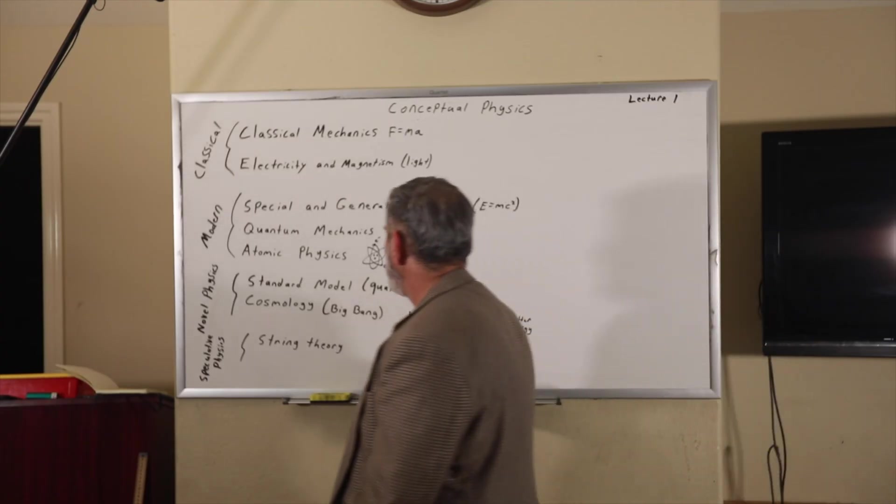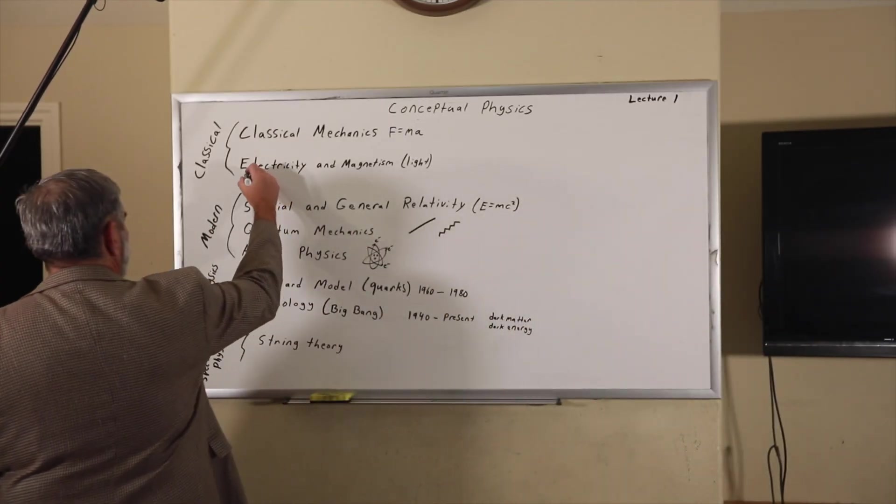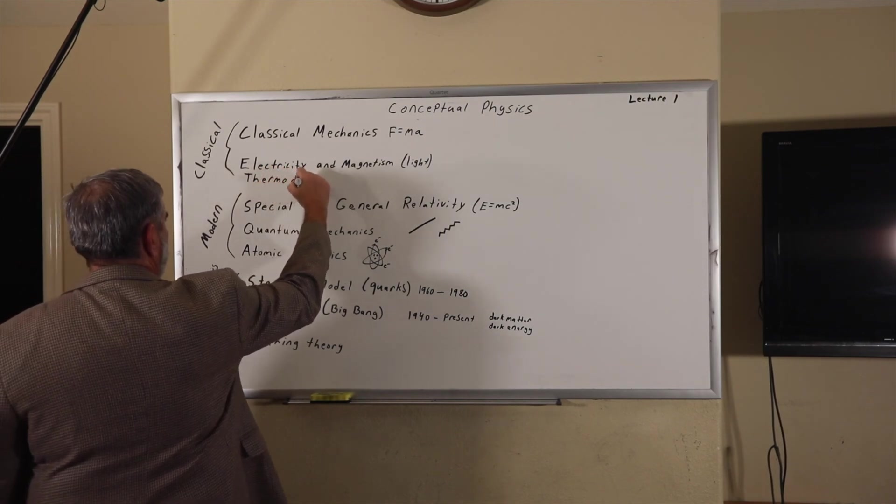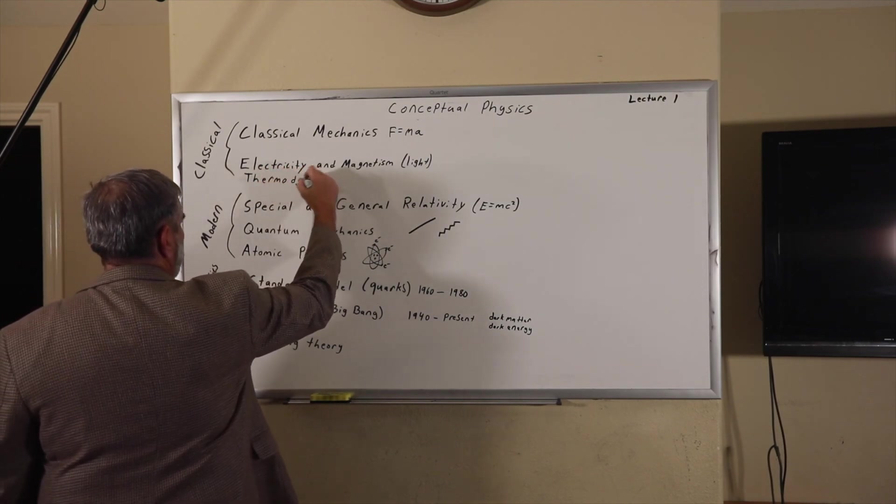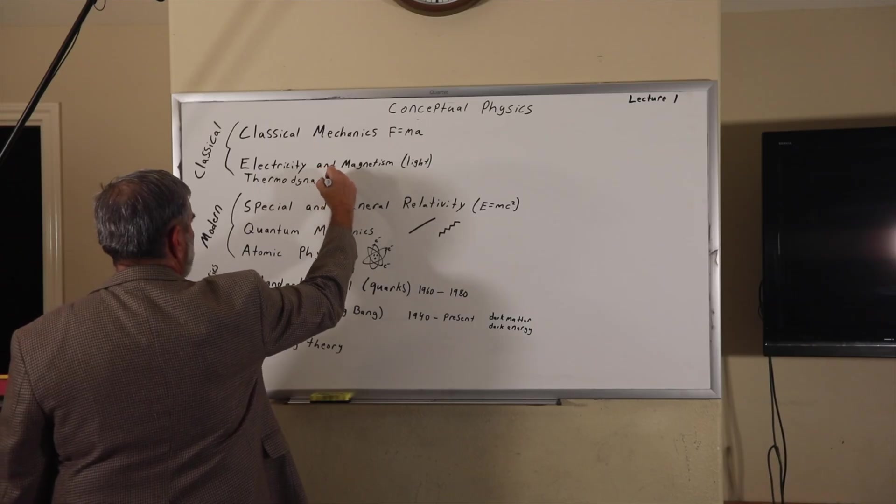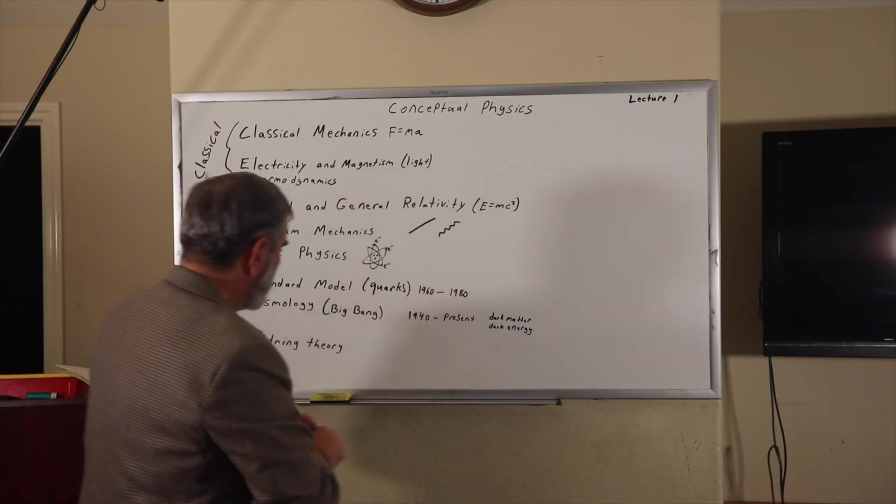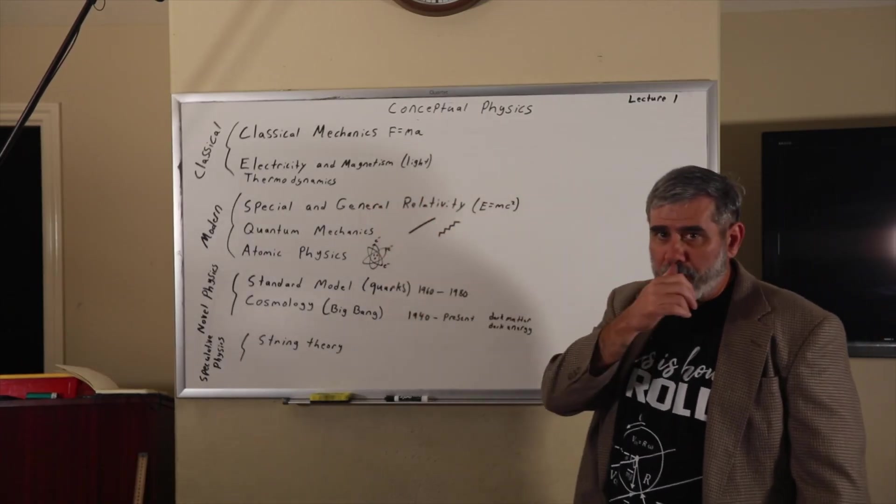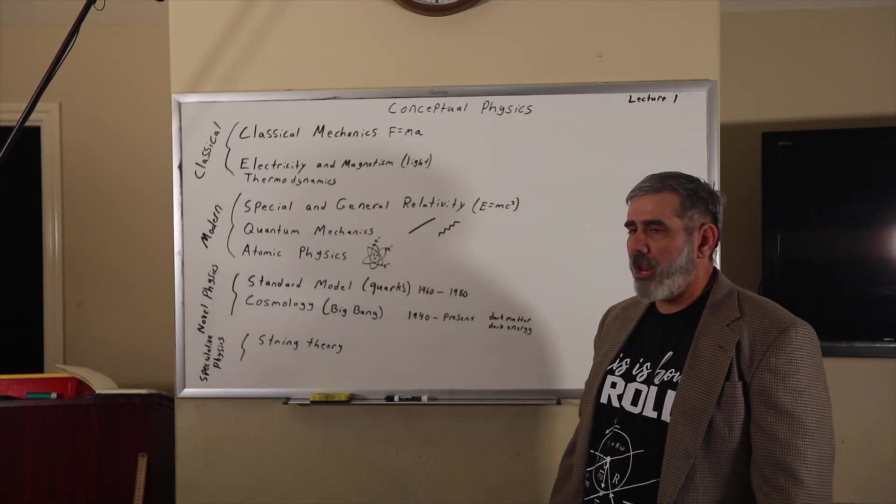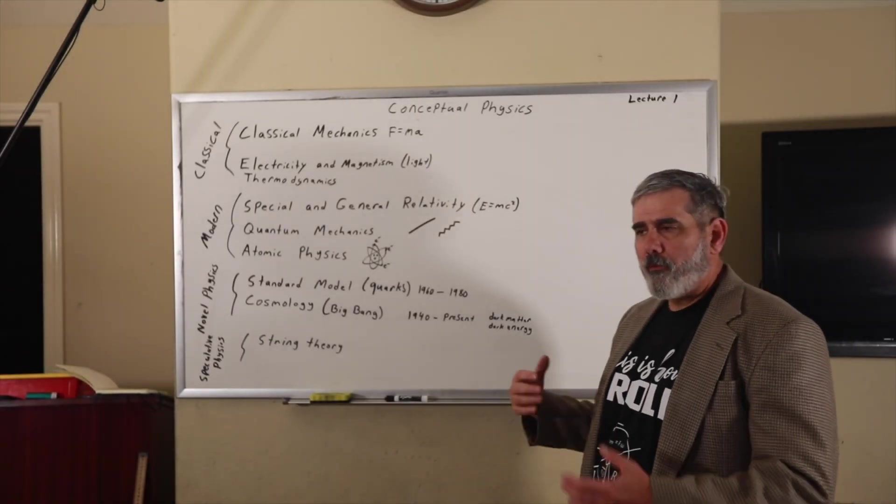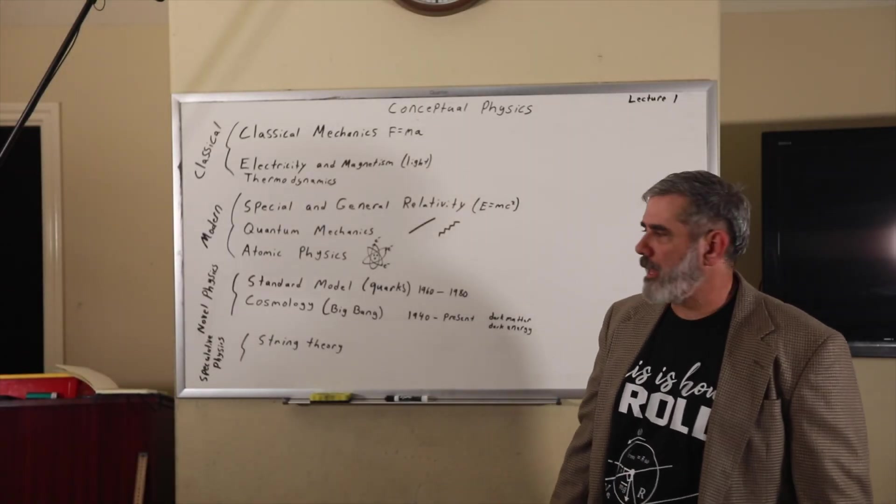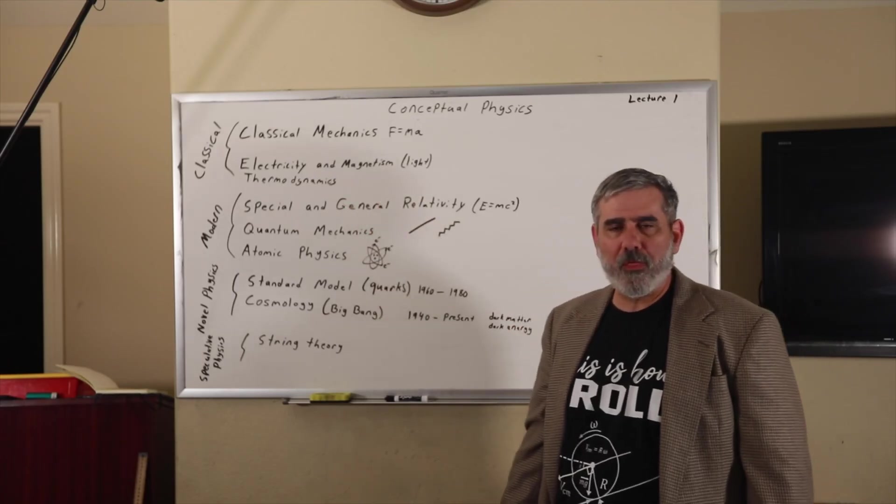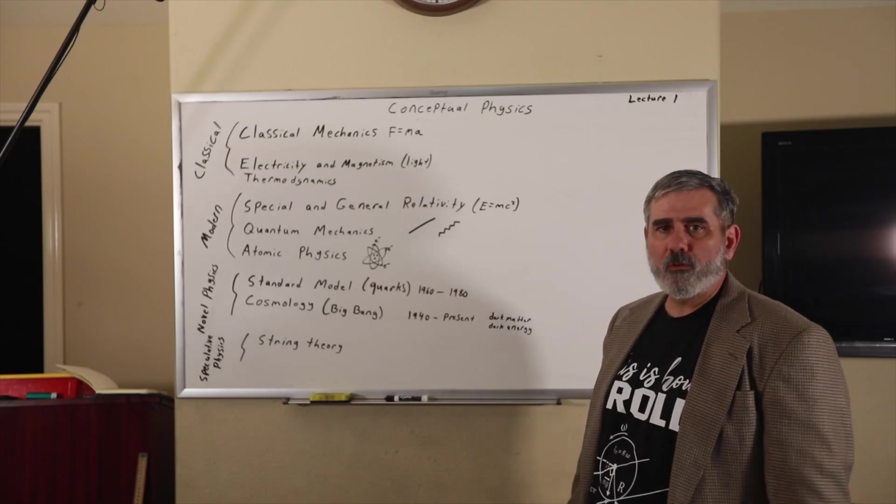And I completely forgot to put in any thermodynamics. But the advances in thermodynamics came at different times. Most of the work was done in the 19th century. But thermodynamics gave rise to a later version of that, what we call statistical mechanics, which took place in the 20th century. But thermodynamics, the transfer of heat and things like that is also part of classical physics.